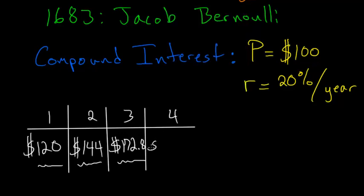So we're left with $207.36. And just so you can compare these numbers to simple interest, after the second year we would have $140, after the third year we would have $160, and after the fourth year we would have $180. So it's clear that compound interest grows much faster than simple interest.